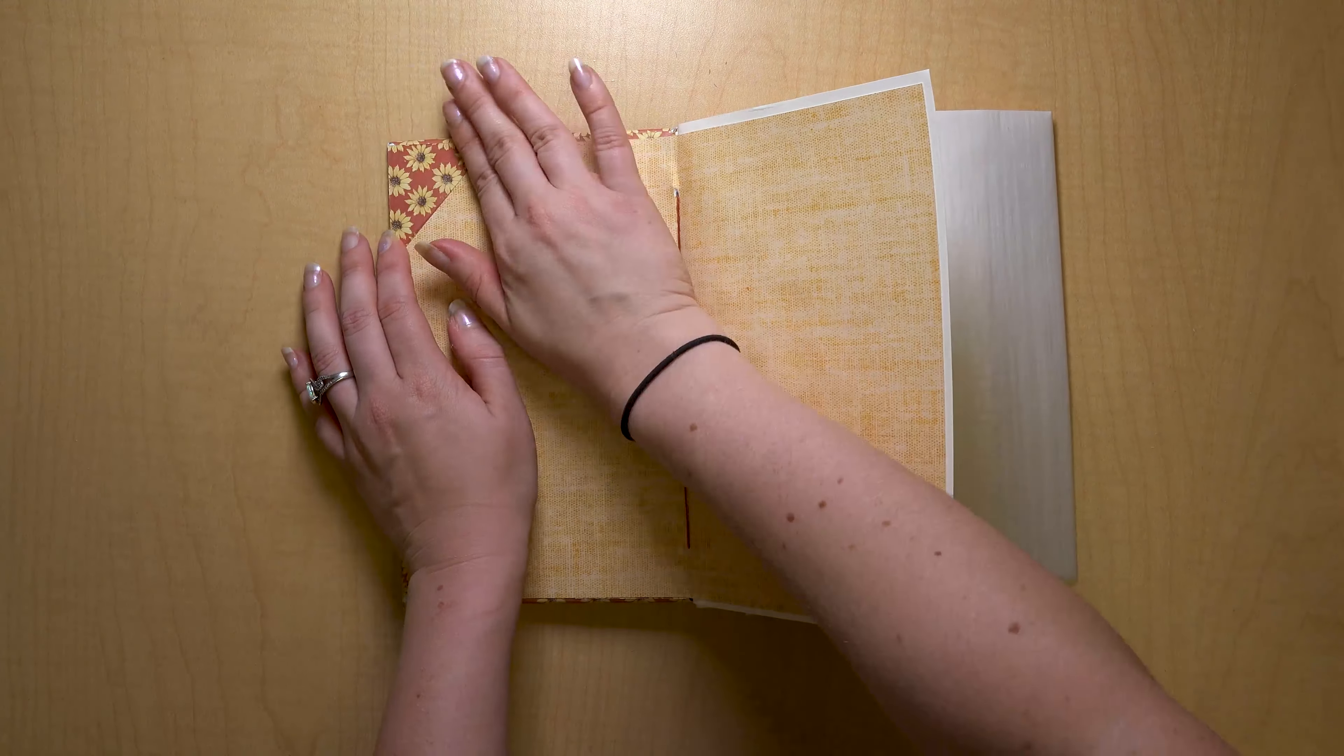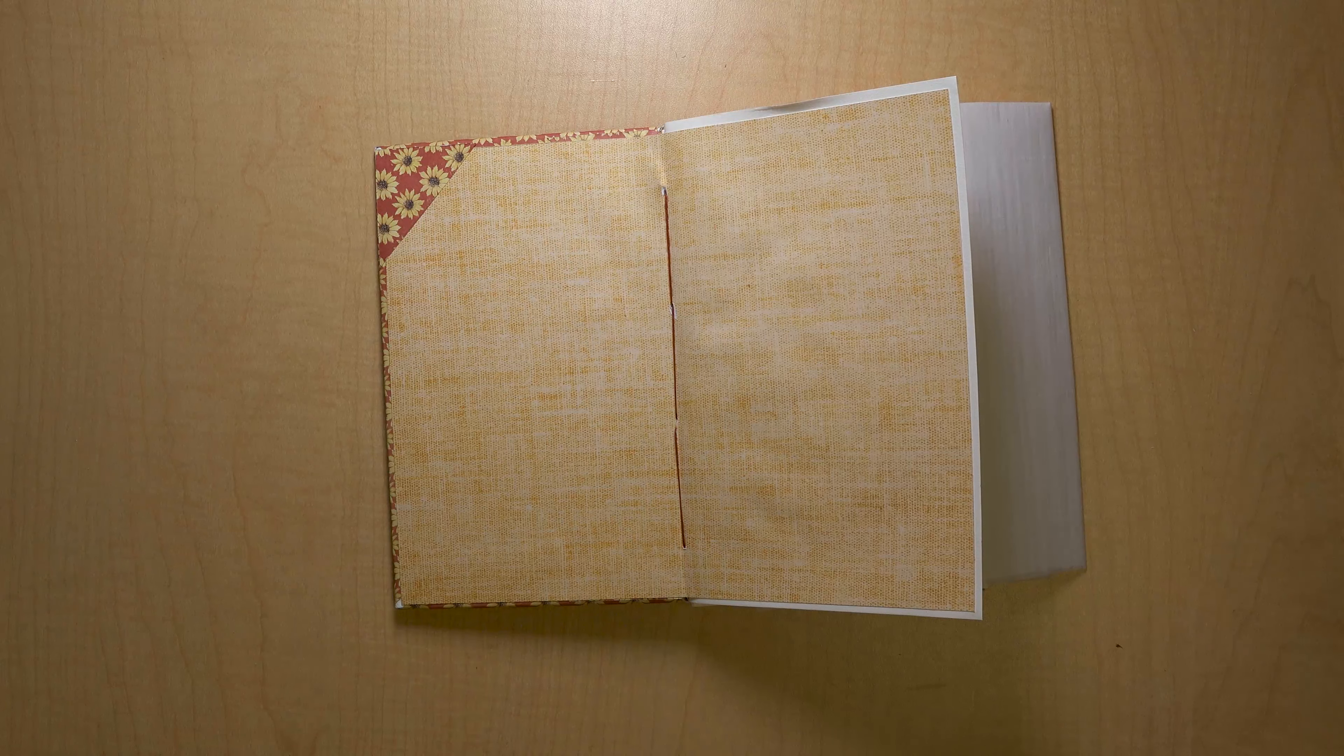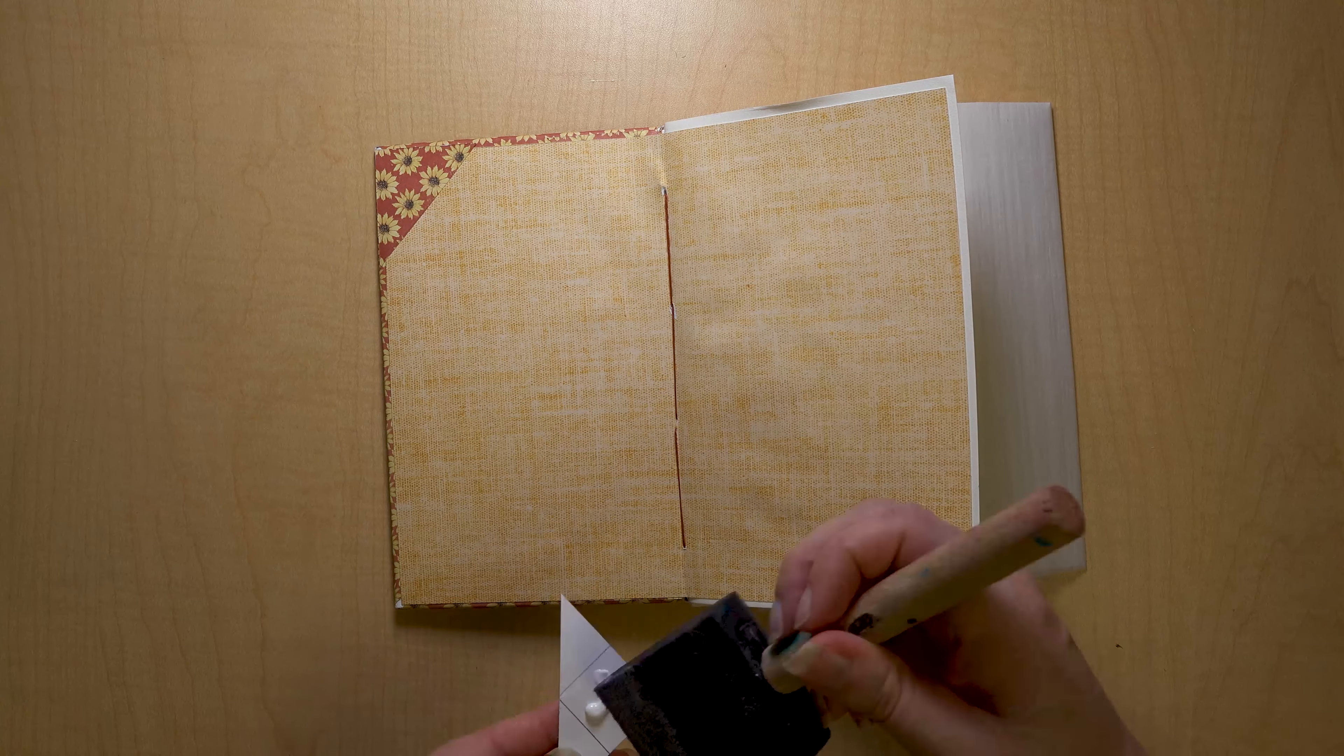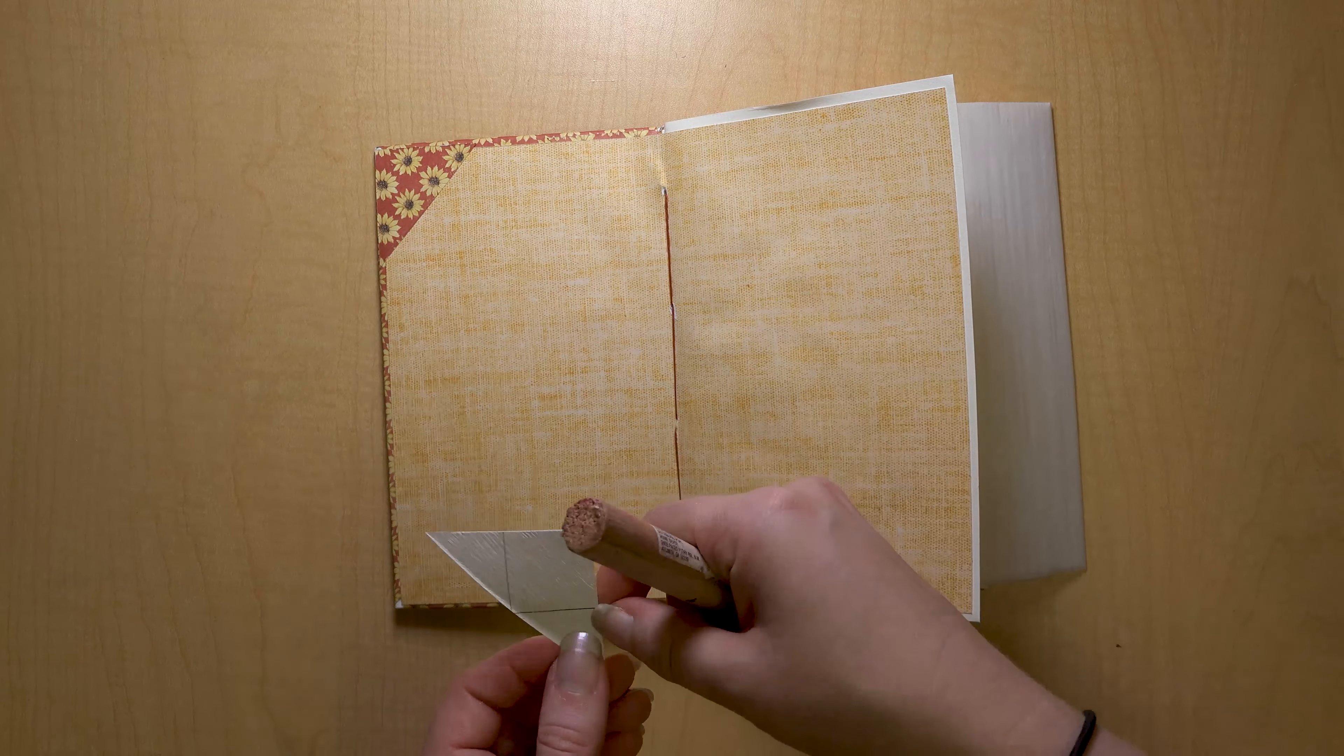For another optional step, you can put your triangular pieces in the corners of your interior covers after you've glued the end papers to them. I think it makes the notebook look really neat.